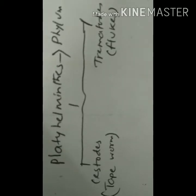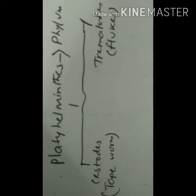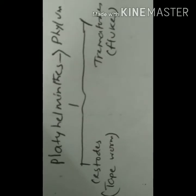On the other hand, the Trematodes are also called flukes. Their body is not tape-like; rather, their body is leaf-like and non-segmented — there are no segments in their body.